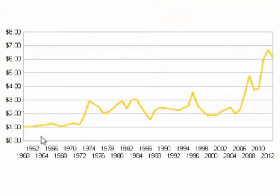This is a graph of the yearly average price of corn from 1960 through 2013. In 1960, corn was $1.02 a bushel. In 2013, corn was $6.15 a bushel, about six times as high as the price of corn in 1960.